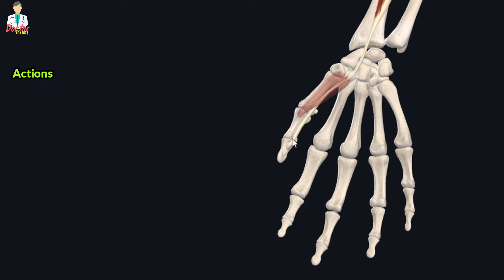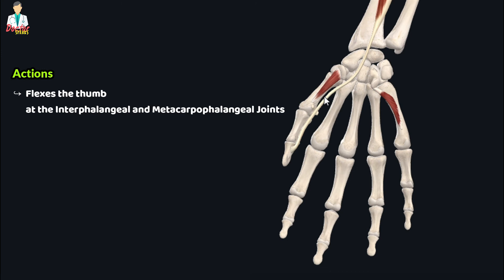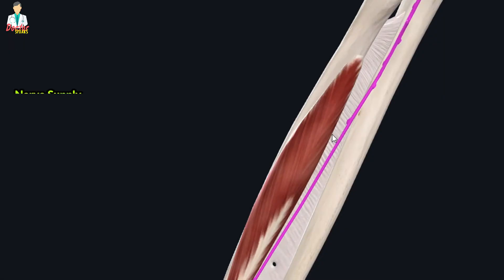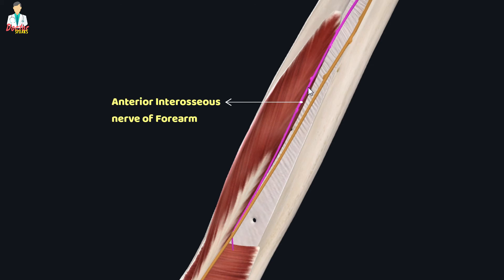On contraction, the flexor pollicis longus acts through its tendon of insertion onto the distal phalanx of the thumb and flexes the thumb at the distal interphalangeal and metacarpophalangeal joints. Another important function of this muscle is the opposition of the thumb to the other fingers, allowing us to grasp objects. This muscle receives its nerve supply from the median nerve through its branch, the anterior interosseous nerve of the forearm, which also innervates the pronator quadratus muscle.